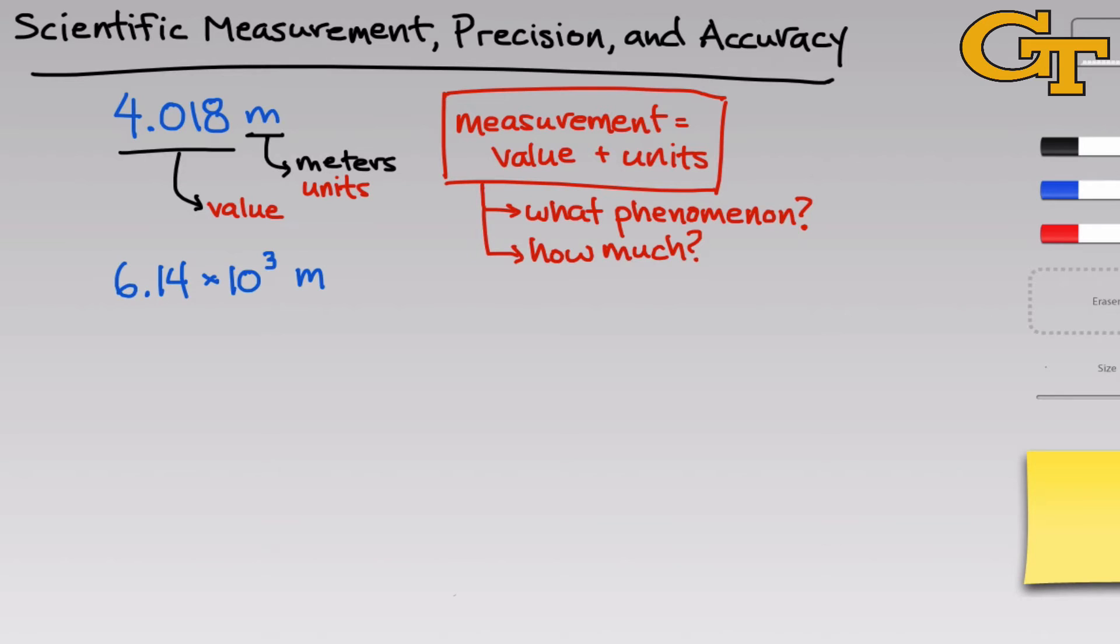As I mentioned, scientific measurements can span a very large range. So we use what's called scientific notation to represent very large and very small numbers. In fact, any number that's less than 1 or greater than 10 can be written in scientific notation. And the way we write scientific notation is shown for you here.